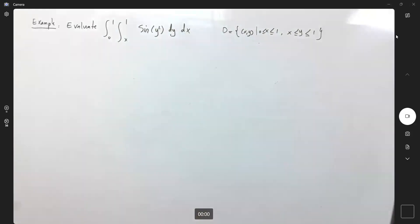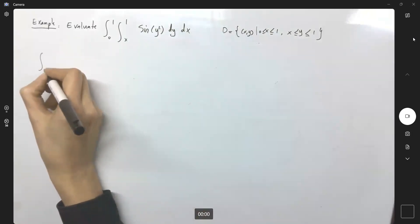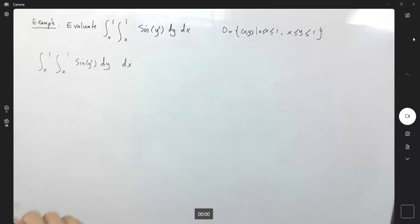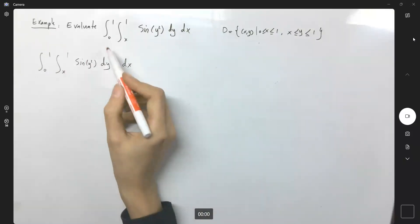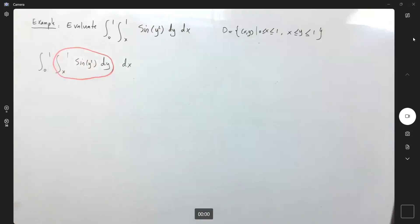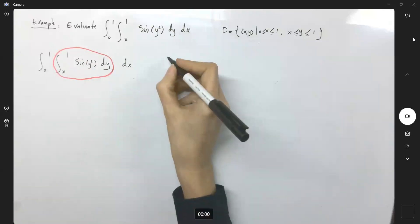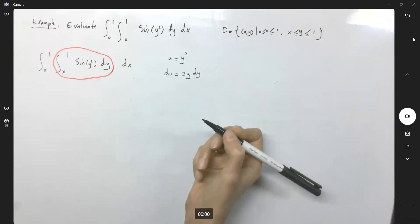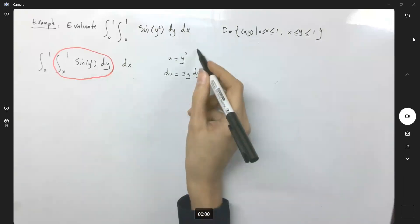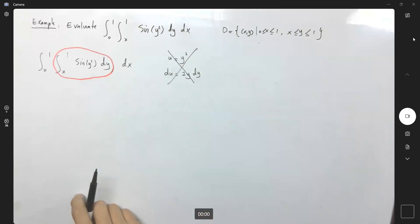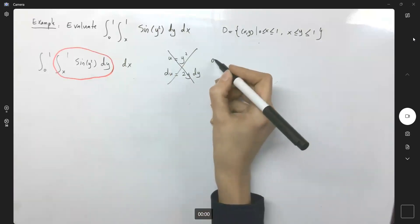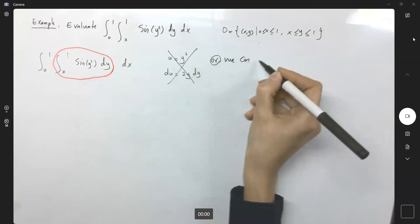Let us try to solve this double integral first. Is it easy? We have the integral from 0 to 1, x to 1, of sin(y²) dy dx. We first find the inner integral with respect to y. You might try u-substitution: u = y², du = 2y dy — but there is no y here, so u-substitution doesn't work. Since u-sub doesn't work, we have to apply other methods, or we can switch the boundaries.